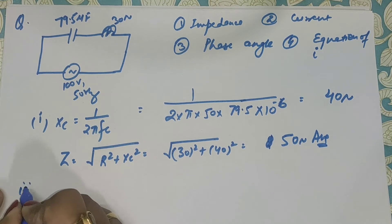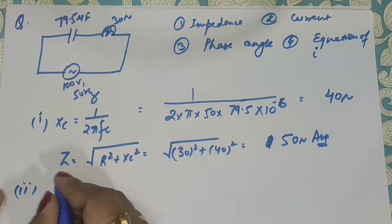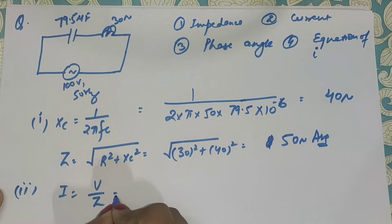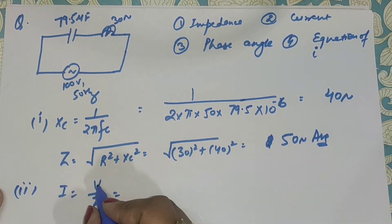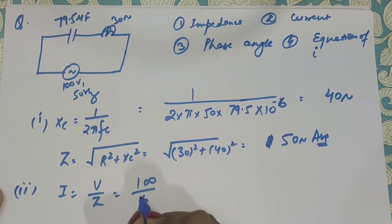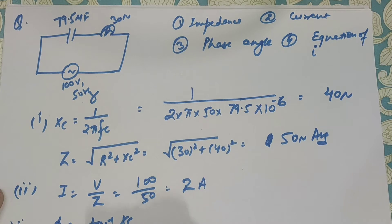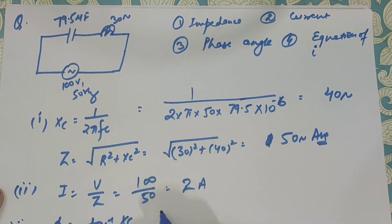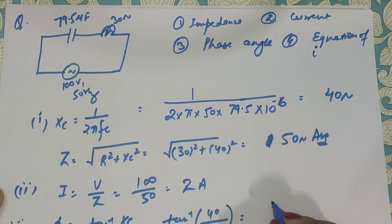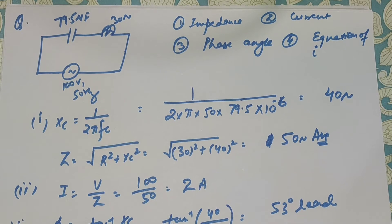First part is complete. Second, calculate current: I = V/Z = 100/50 = 2 ampere. Third, calculate phase angle: phi = tan inverse(XC/R) = tan inverse(40/30). If you solve this, you will get 53 degrees lead. You need a scientific calculator for this.